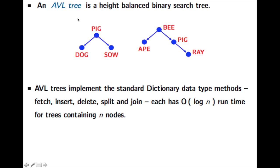So an AVL tree is simply a height balanced binary search tree. And so that means that we put the keys into this tree in the regular order where to the left side you go to smaller elements and to the right side you go to larger elements. But we also are going to keep it height balanced. And that would make it possible for us to do fetch, insert, delete, split, and join all in log n time.